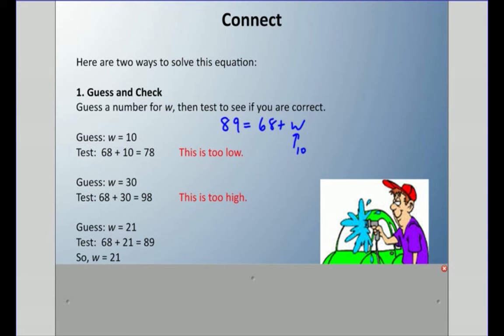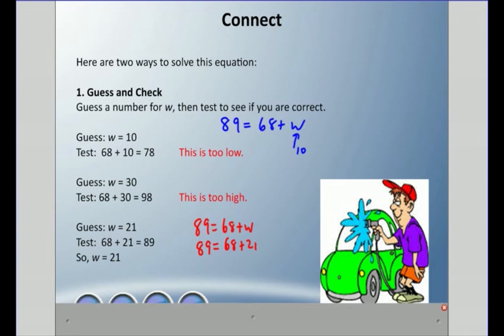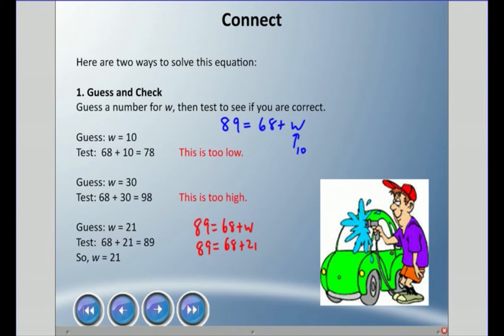When we write our work, and this is important to show your teacher, you always start with showing the equation. So 89 equals 68 plus w, that's showing our work. I'm doing guess and check, so I would do this every time: does 89 equal 68 plus 21? I would figure that out. I would say yes it does, but your answer would say w equals 21. That's how you should show your work. Show the formula, show your work, and your answer is w equals 21.